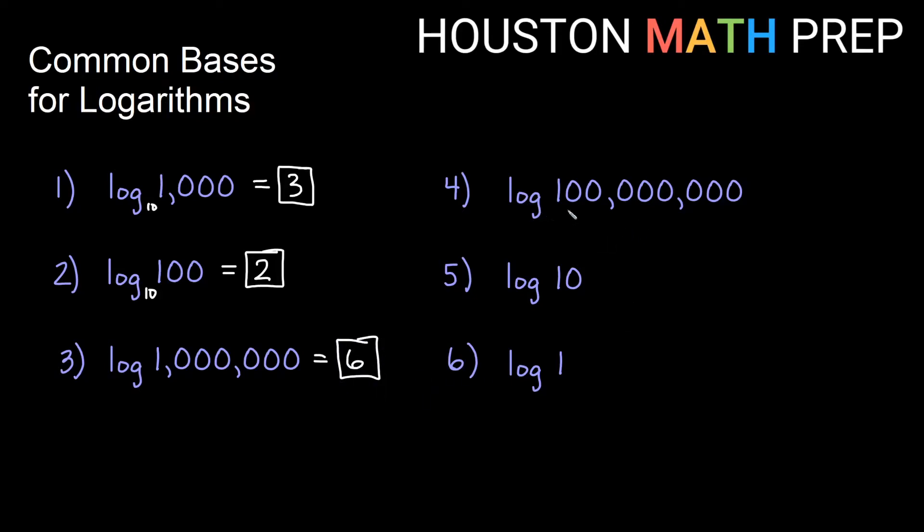Here log base 10 of 100 million, so maybe it helps you do a little shortcut. You can count them in groups. This is 3 and that's 6 and then we have 2 more. So that's a total of 8 powers of 10. So this is 10 to the 8 is what we're saying.